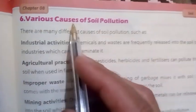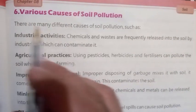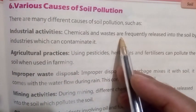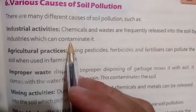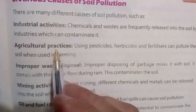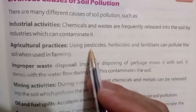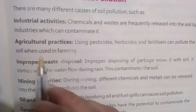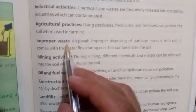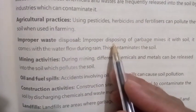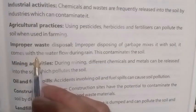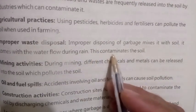Number six: Various Causes of Soil Pollution. There are many different causes of soil pollution, such as industrial activities — chemicals and wastes are frequently released into the soil by industries, which can contaminate it. Agricultural practices — using pesticides, herbicides, and fertilizers can pollute the soil when used in farming. Improper waste disposal — improper disposing of garbage mixes it with soil; it comes with the water flow during rain, which contaminates the soil.